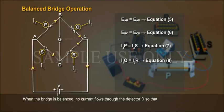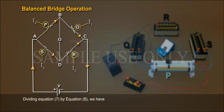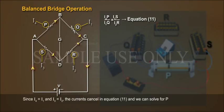I4 equals I1, Equation 9, and I3 equals I2, Equation 10. Dividing equation 7 by equation 8, we have: I4P by I1Q equals I3S by I2R, Equation 11.